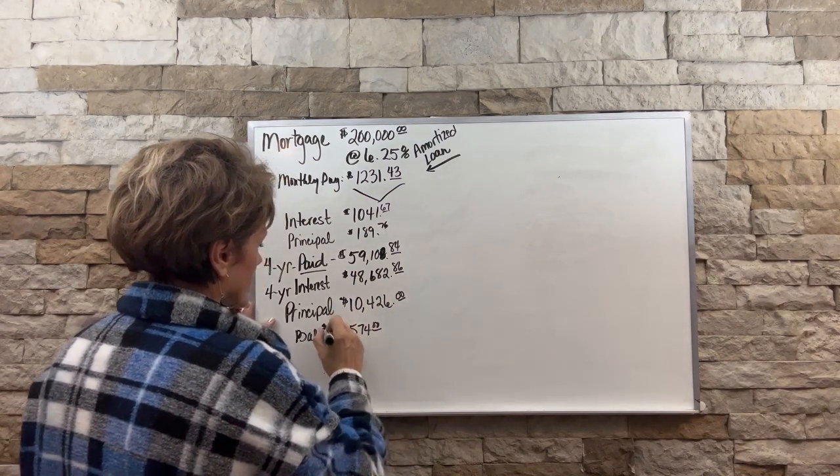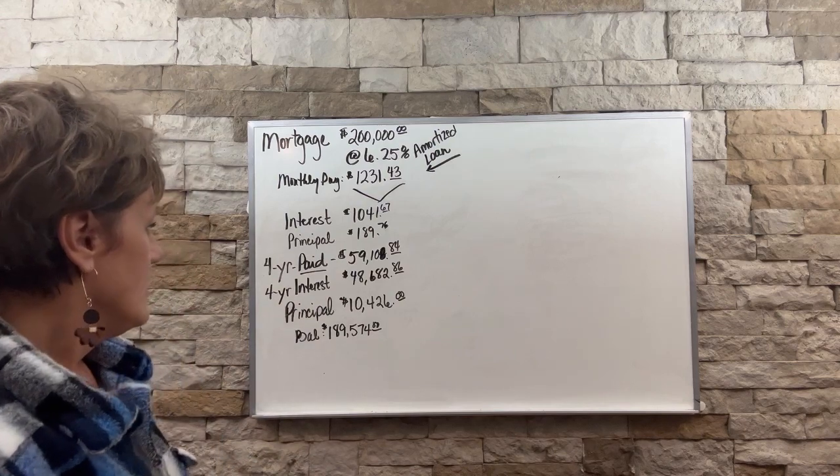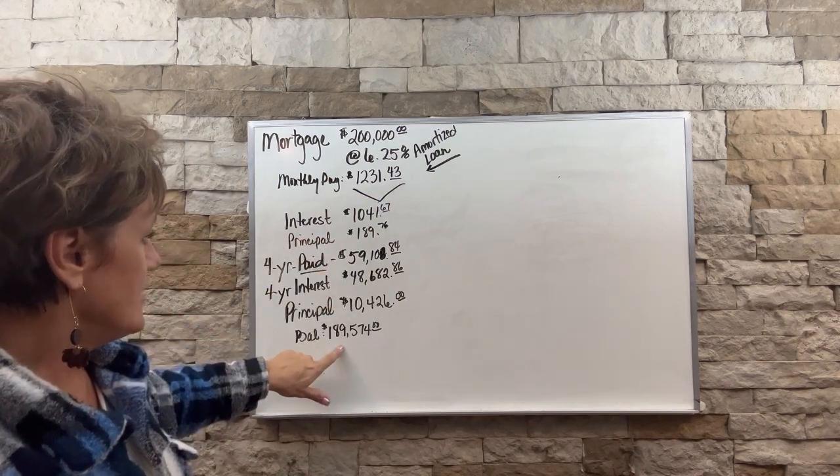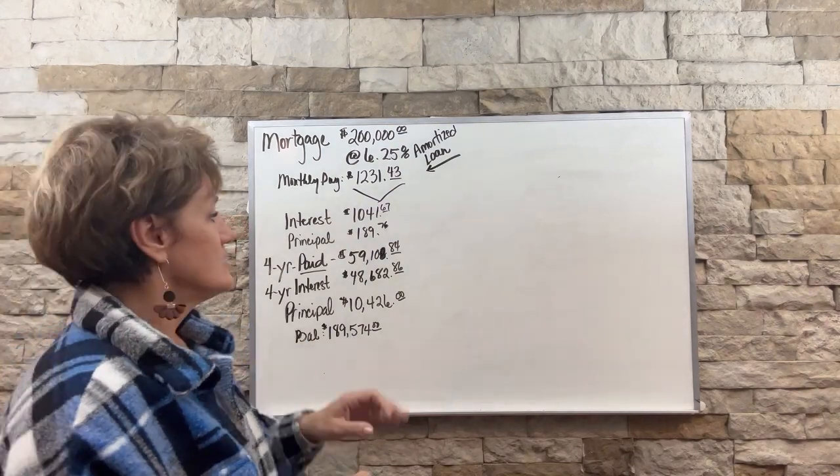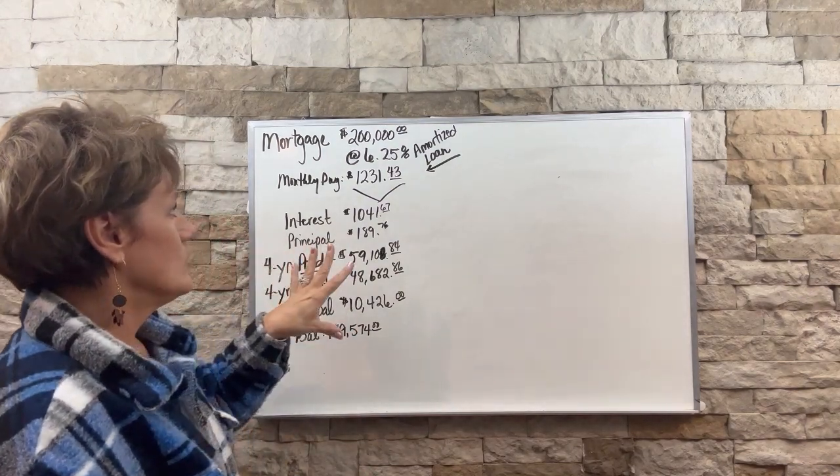That's pretty discouraging, isn't it? $59,000 has only brought it down $10,000. That's what's discouraging about mortgage loans.